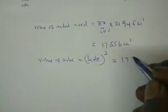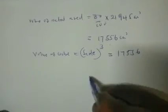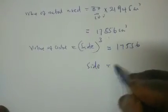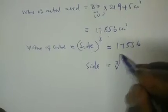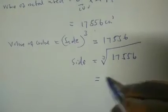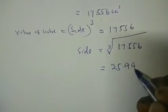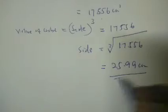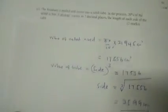This is the volume of metal used to form the cube. The volume of a cube equals side cubed, so side cubed equals 17,556. Therefore the side length equals the cube root of 17,556, which gives us 25.99 centimeters — the length of one side of the cube.